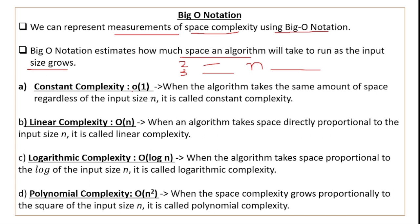First we have constant complexity, written as O(1) — order one or big O of one. When the algorithm takes the same amount of space regardless of the input size, it is called constant complexity. The algorithm is independent of the input size and always occupies the same fixed amount of space.